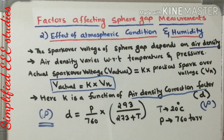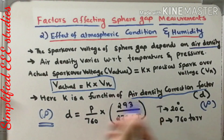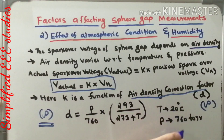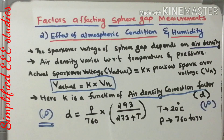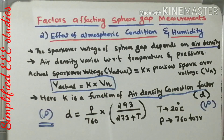You can put the value of temperature, say 20 degrees Celsius, and P is typically 760 Torr as a unit of pressure. Once you calculate the value of D, the air density correction factor, you can correspondingly choose the value of K. By multiplying K with V_N, you get the actual value of spark over voltage. It is very clear that spark over voltage directly depends on the air density correction factor.